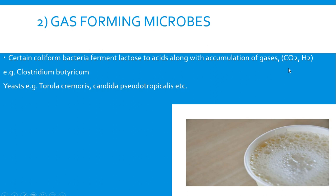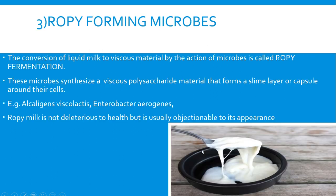Clostridium produces more carbon dioxide, whereas E. coli or coliform bacteria are mainly involved in the production of H2. Yeasts are also involved in producing gas. Those are Torula cremoris, Candida pseudotropicalis, and Torulopsis spherica, which are majorly reported in milk, producing carbon dioxide in greater amounts rather than hydrogen. This is how gas production occurs because of these microbes in the milk.